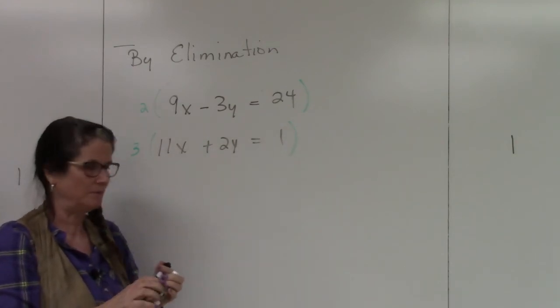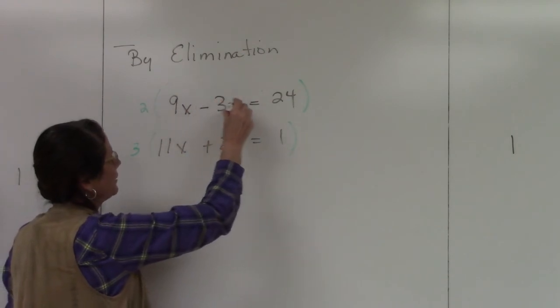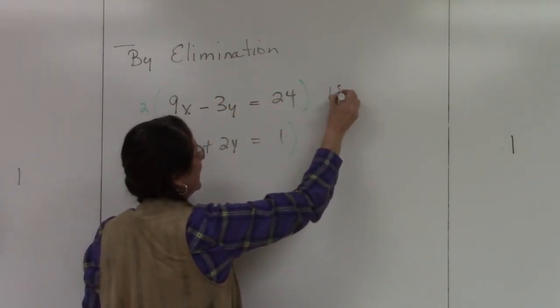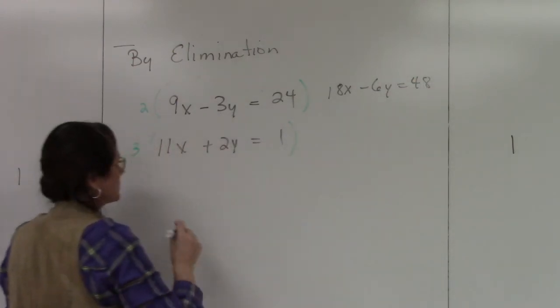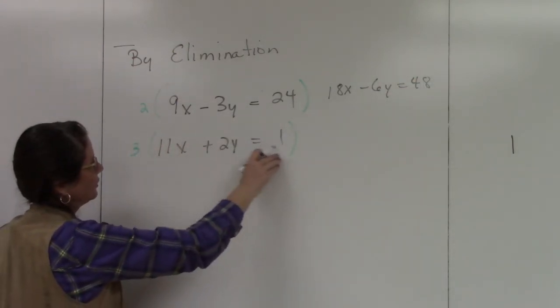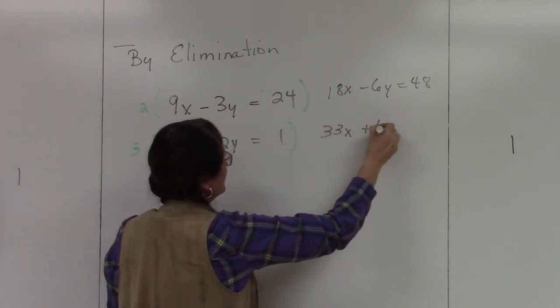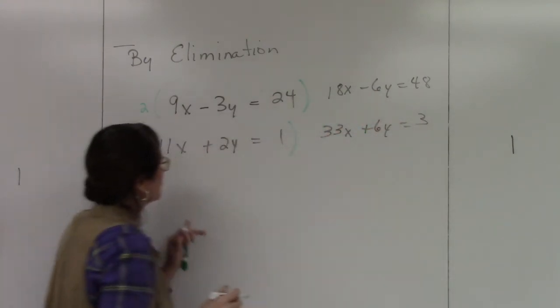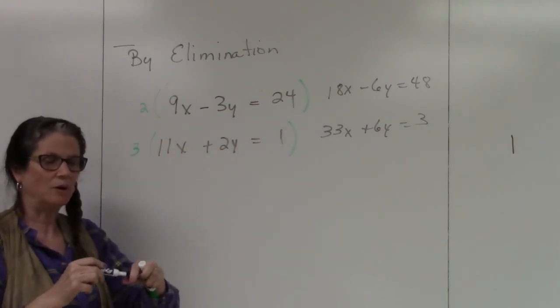So I end up with a new set of equations. So when I multiply this through by 2, I get 18x minus 6y equals 48. This one I'm going to multiply everything through by 3, so I get 33x plus 6y equals 3. So make sure you hit and multiply every single term, otherwise it won't stay balanced.